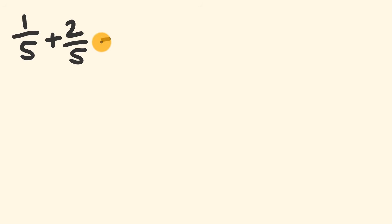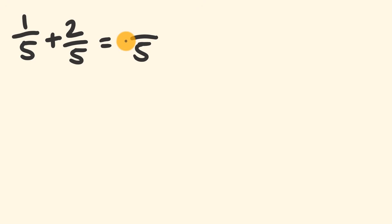We're going to start with addition questions. There are about three types of questions you'll get. The first is where we have the same denominator — a question like 1 fifth plus 2 fifths. What you notice straight away is that we have the same bottom number, the same denominator. If this is the case, we keep that same denominator in our answer, so the denominator is 5. For the numerator, we just add 1 plus 2, which equals 3. Keep that denominator and just add the numerators together.